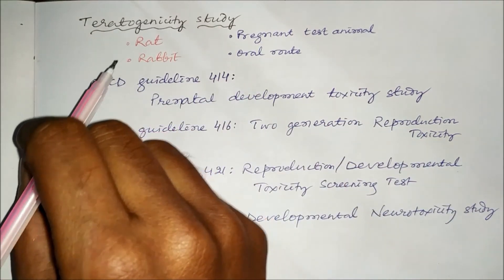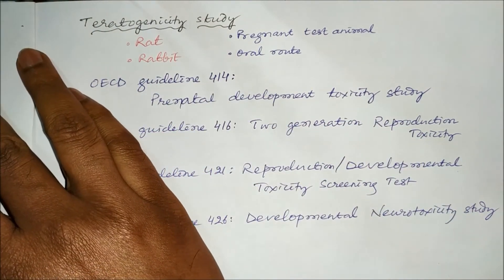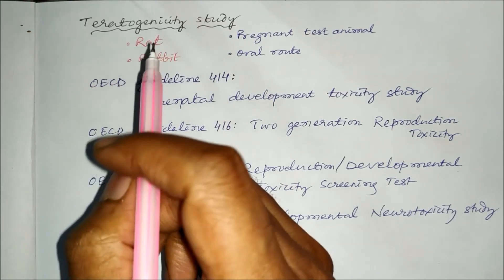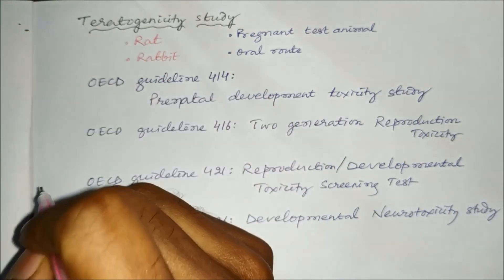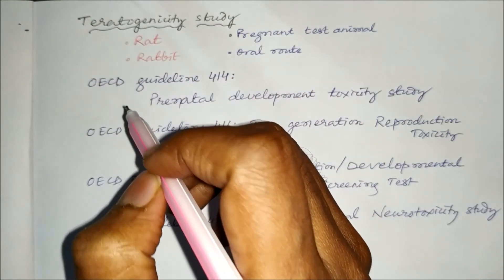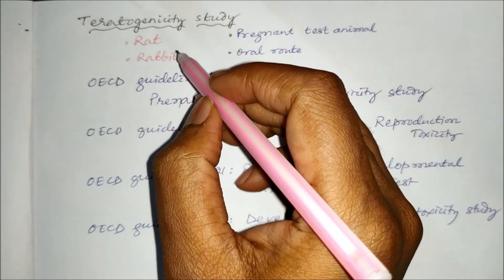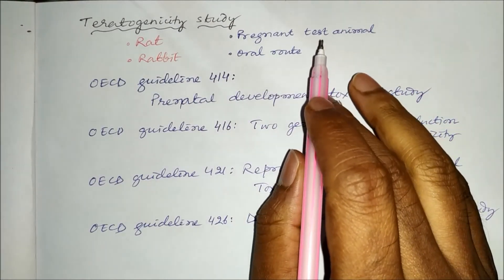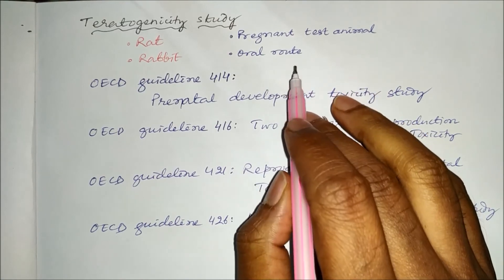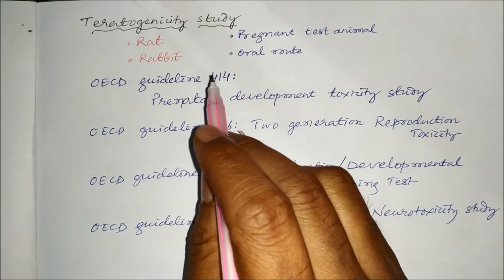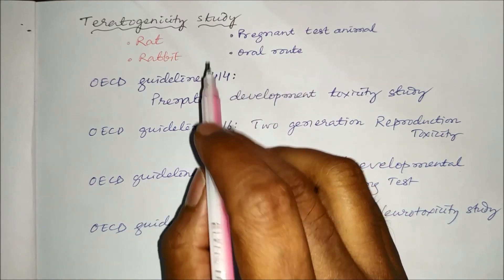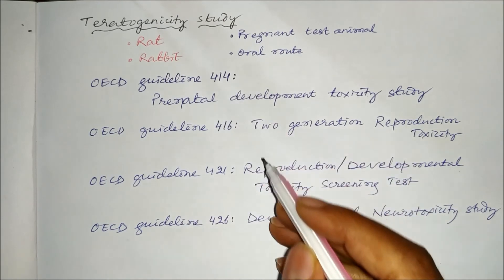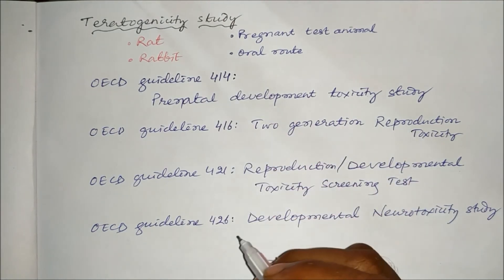To determine whether a drug is teratogenic during the new drug discovery process, the drug must be studied in two species — mostly rat and rabbit. The pregnant test animal is taken and the drug is given through the oral route. The guidelines followed for this study are given by OECD: guidelines 414, 416, 421, and 426.